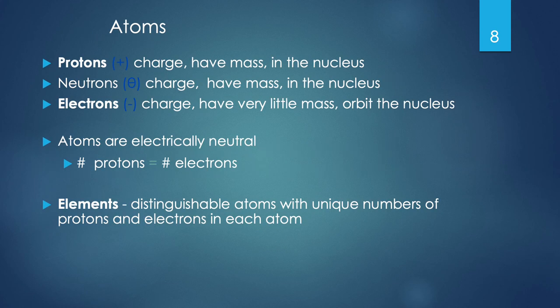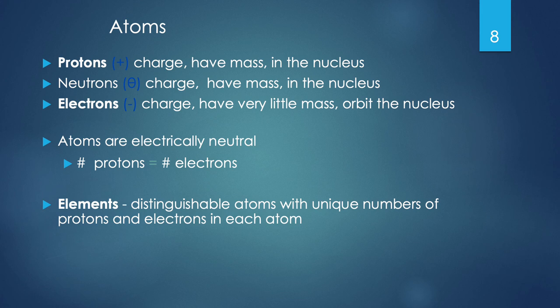Atoms are the smallest stable units of matter, composed of three primary subatomic particles. There are other subatomic particles, but they're beyond the scope of this class. What you need to focus on are protons, neutrons, and electrons. Protons have a positive charge, have mass, and are in the nucleus. Neutrons have a neutral charge — neutrons, neutral, easy enough — and they also have mass in the nucleus. Electrons are different: they have a negative charge and very little mass — almost one-two-thousandth the size of other subatomic particles — and they orbit the nucleus in valence shells.